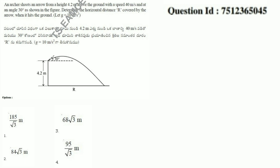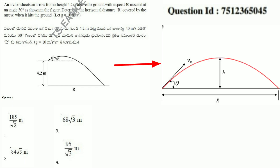This is a direct formula: R = u² sin2θ / g. If we apply this formula directly, notice the equation doesn't account for the 4.2 meters — the height of the tower is being treated as 0, and ground level is 0. So if we apply this formula, we apply R = u² sin2θ / g.